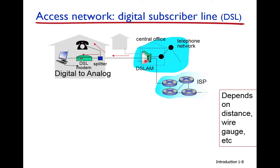The DSLAM combines signals and data from all homes. If it is voice traffic, it is forwarded to the phone network; if it is internet or data traffic, it is forwarded to the internet. This means the telephone company also acts as an internet ISP.